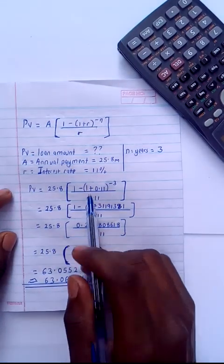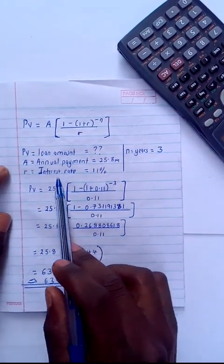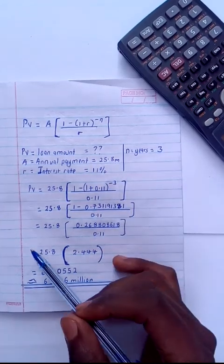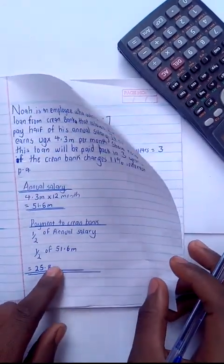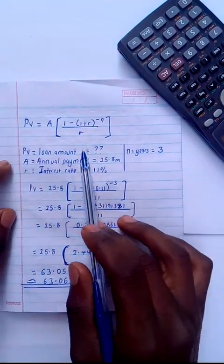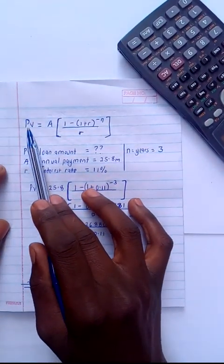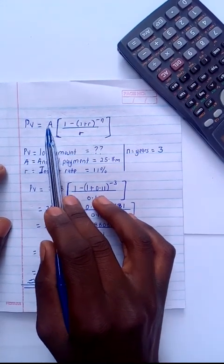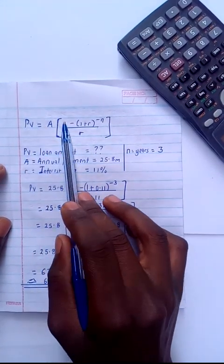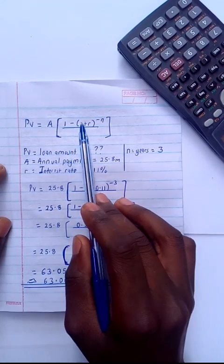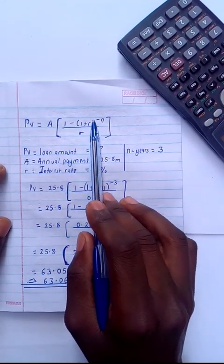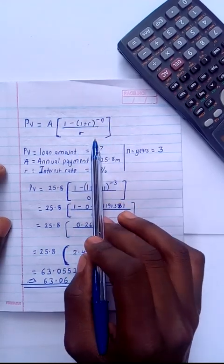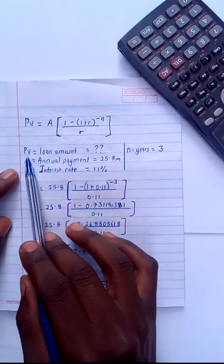I've already known my annual payment which is 25.8 million. I'm going to use the present value concept with the formula: PV = A × [1 - (1 + r)^(-n)] / r. The PV will equal the loan amount, A is the annual payment, r is the interest, and n is the number of years.